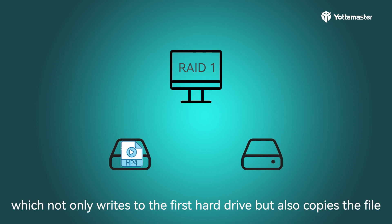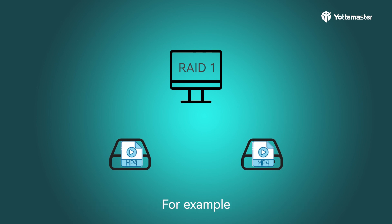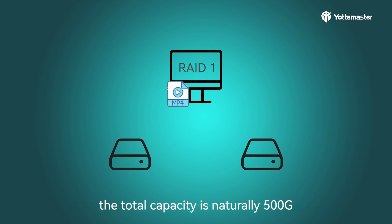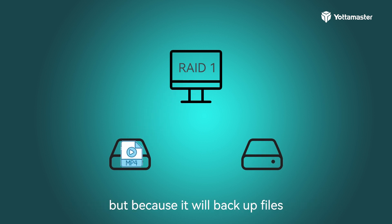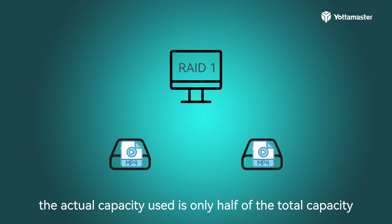To improve security, we have RAID 1, which not only writes to the first hard drive but also copies the file to a second hard drive. For example, if we use two 250GB hard drives to form a RAID 1, the total capacity is 500GB, but because it backs up files, the actual usable capacity is only half — 250GB. So although RAID 1 is highly secure, the actual capacity used is only half of the total capacity.